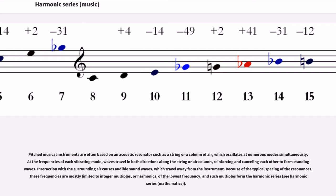At the frequencies of each vibrating mode, waves travel in both directions along the string or air column, reinforcing and canceling each other to form standing waves. Interaction with the surrounding air causes audible sound waves which travel away from the instrument. Because of the typical spacing of the resonances, these frequencies are mostly limited to integer multiples or harmonics of the frequency, and such multiples form the harmonic series.